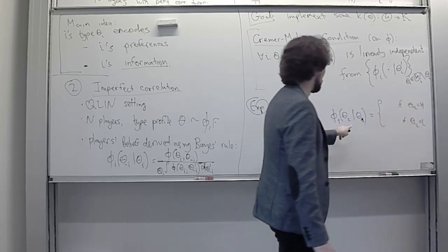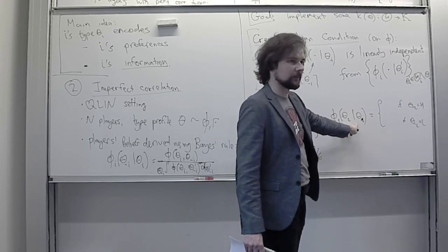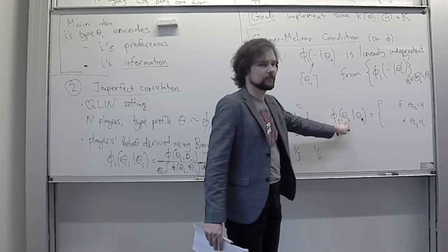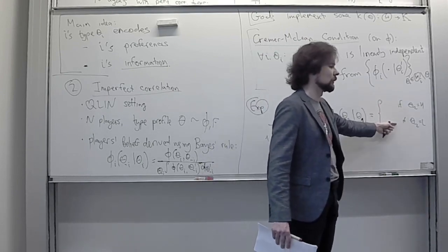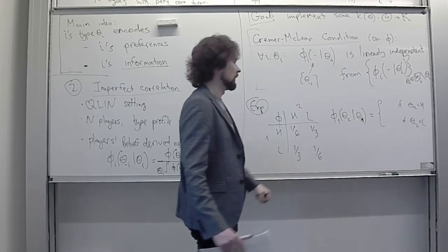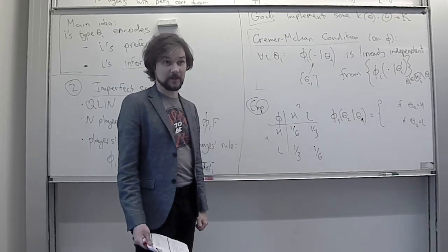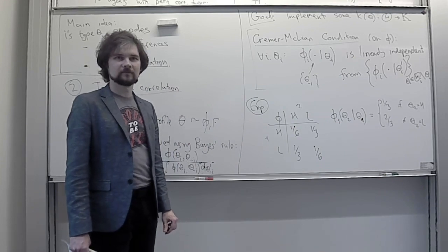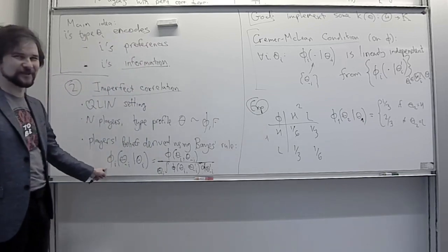Applying Bayes' rule: the probability player one assigns to player two being of low type, given that player one is of high type, is the probability of profile (H,L) divided by the total probability of player one having high type. That's phi(H,L) divided by phi(H,L) plus phi(H,H), which is 1/6 divided by 1/6 plus 1/3, which equals 1/3.